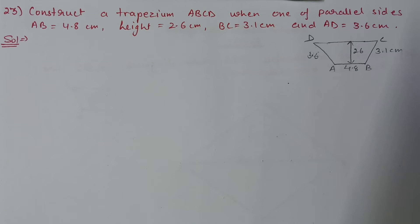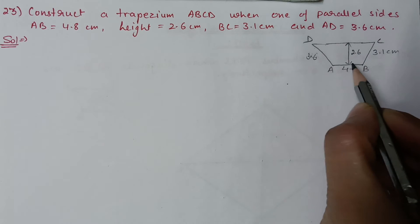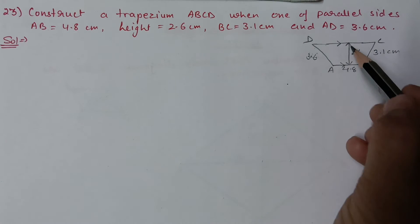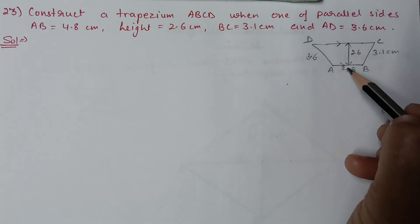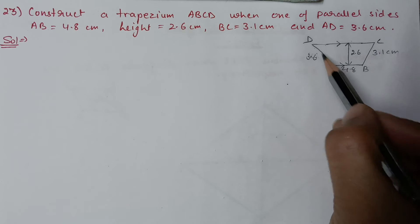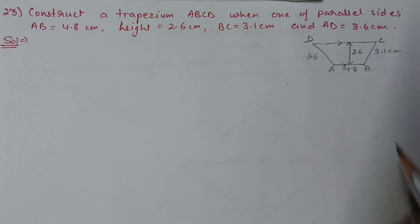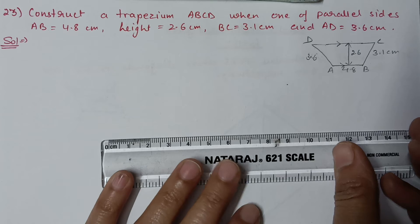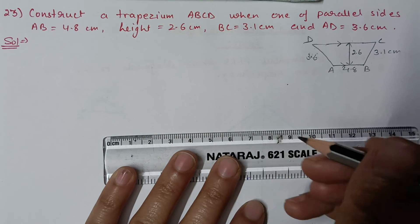Question 23: construct a trapezium ABCD where one parallel side AB equals 4.8 centimeter, height (perpendicular distance between parallel lines) is 2.6 centimeter, BC is 3.1 centimeter, and AD is 3.6 centimeter. Draw a rough figure first, then draw the baseline AB equal to 4.8 centimeter.